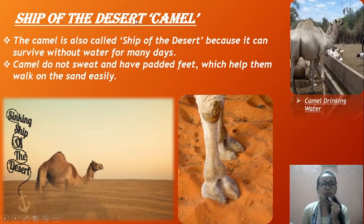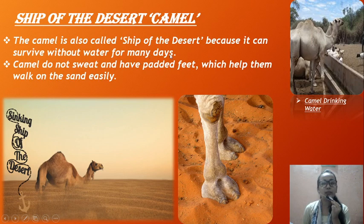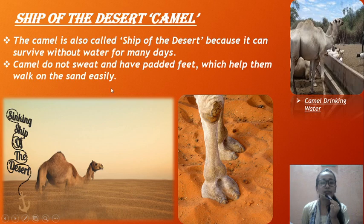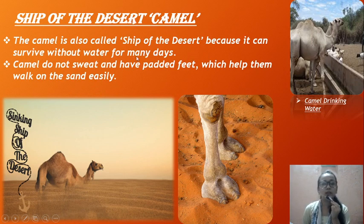Now let us learn why the camel is called the ship of the desert. The camel is called the ship of the desert because it can survive without water for many days. Since the desert has very scarce water, the camel is very well suited for living there.